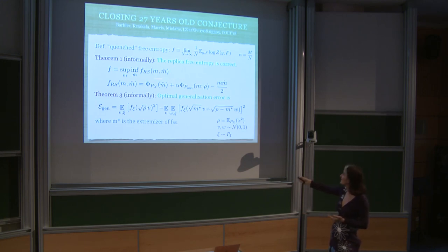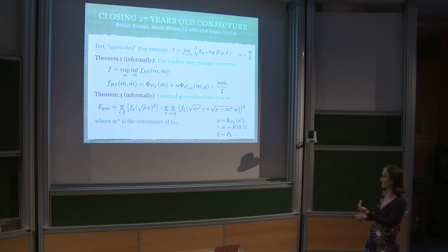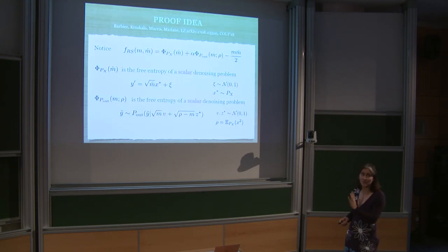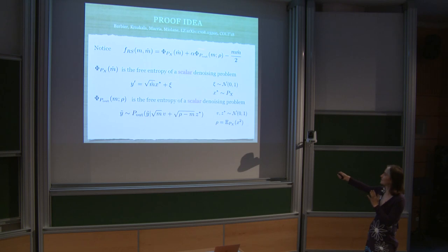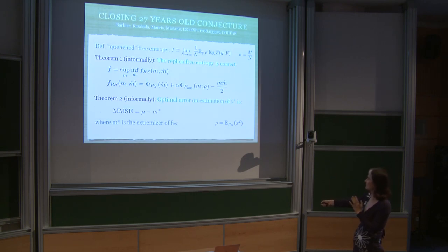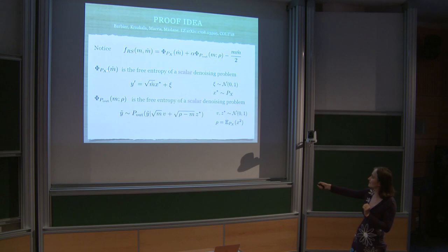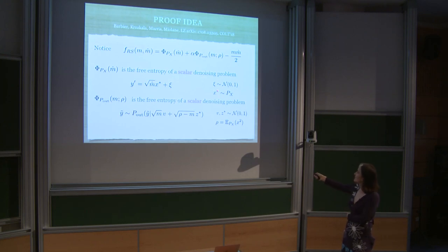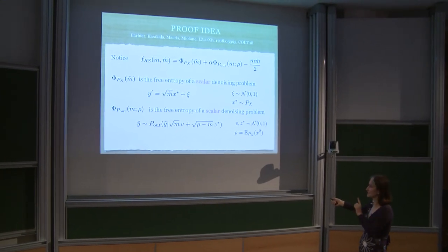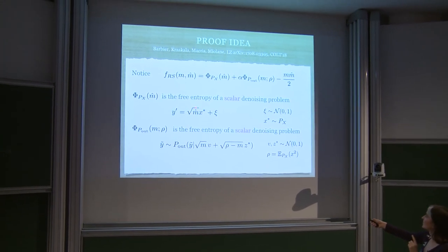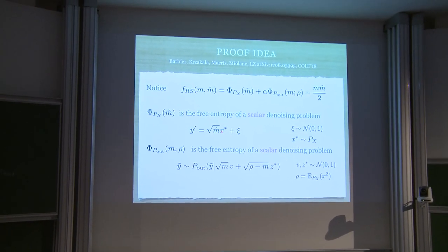The free energy is a generating function in statistical physics — from it you can get everything you're interested in. If you take the m that achieves the supremum, then rho minus m* is the minimum mean square error directly. Similarly for the optimal generalization error — there's a formula involving m*, the value of m achieving the supremum of this scalar function. From analyzing how this function looks, you get both the optimal estimation error and the optimal generalization error.